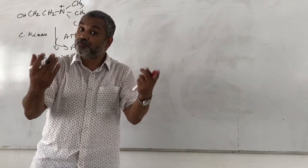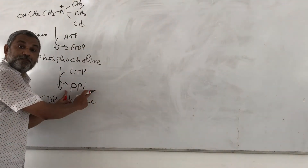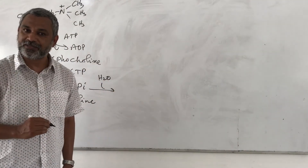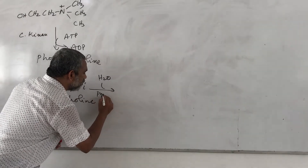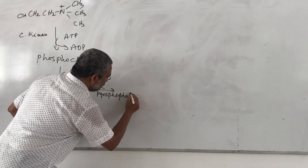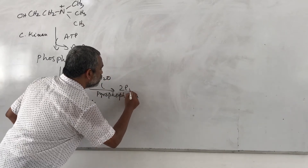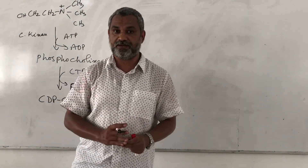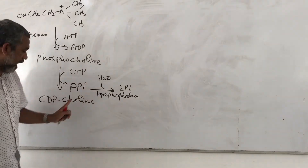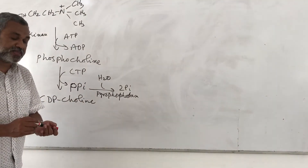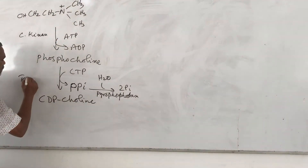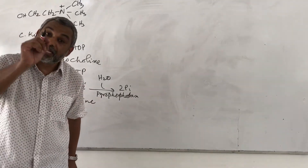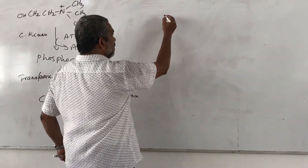This reaction is pushed forward by hydrolyzing the pyrophosphate. Pyrophosphate can easily be hydrolyzed by addition of water, requiring an enzyme known as pyrophosphatase, yielding 2 Pi. This makes the reaction thermodynamically favorable. The product is CDP-choline, and the enzyme that catalyzes the CTP addition step is a transferase enzyme.